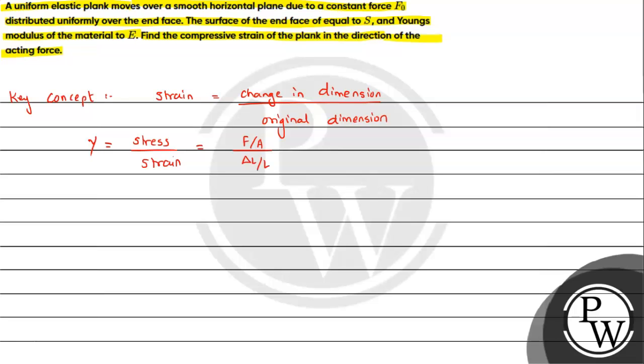So from the situation, we can say strain value is delta L upon L, that can be written as F upon AY. So we have the formulas and we will be using these results to analyze the given question. Now let's try to analyze the situation.